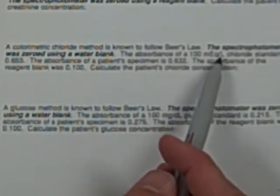The idea behind this kind of problem: a colorimetric chloride method is known to follow Beer's Law. The spectrophotometer was zeroed using a water blank. The absorbance of the 100 milliequivalent standard is 0.655. The absorbance of my patient sample is 0.632. The absorbance of my reagent blank was 0.100.